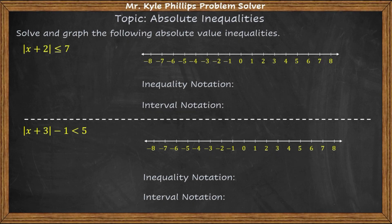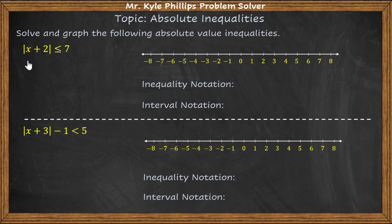Hey everybody. In this video we're going to be talking about absolute value inequalities — we need to solve and graph them. When solving and graphing absolute value inequalities, you solve the same way as an absolute value equation. You have to isolate what's inside the absolute value bars, then set it equal to the positive and the negative of the number.